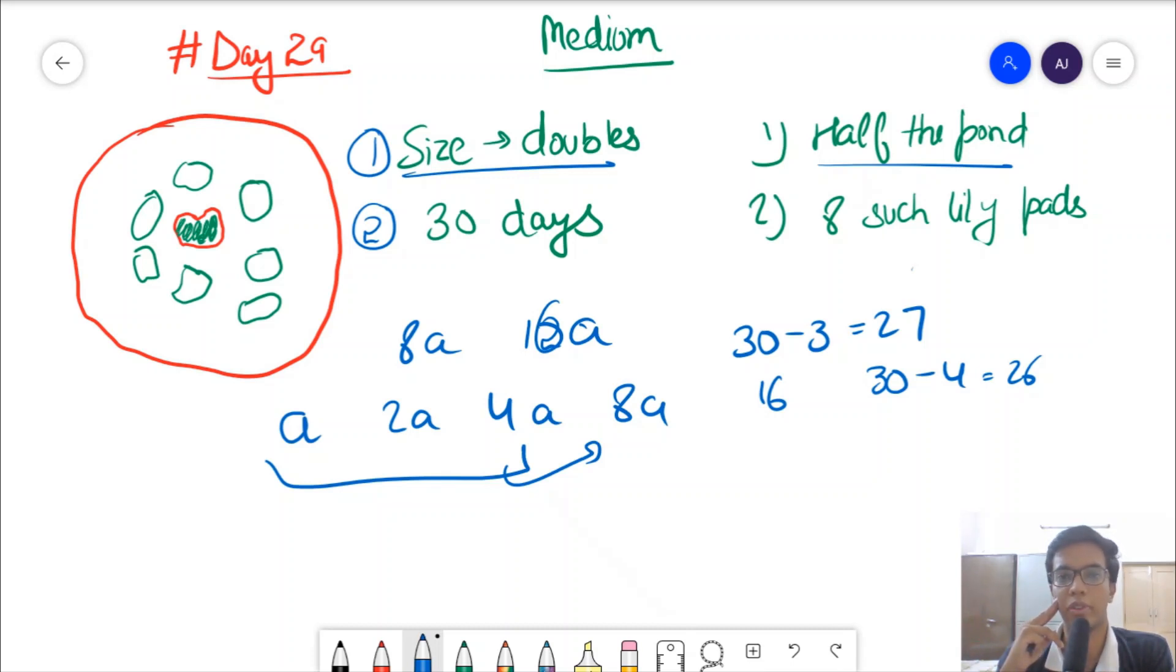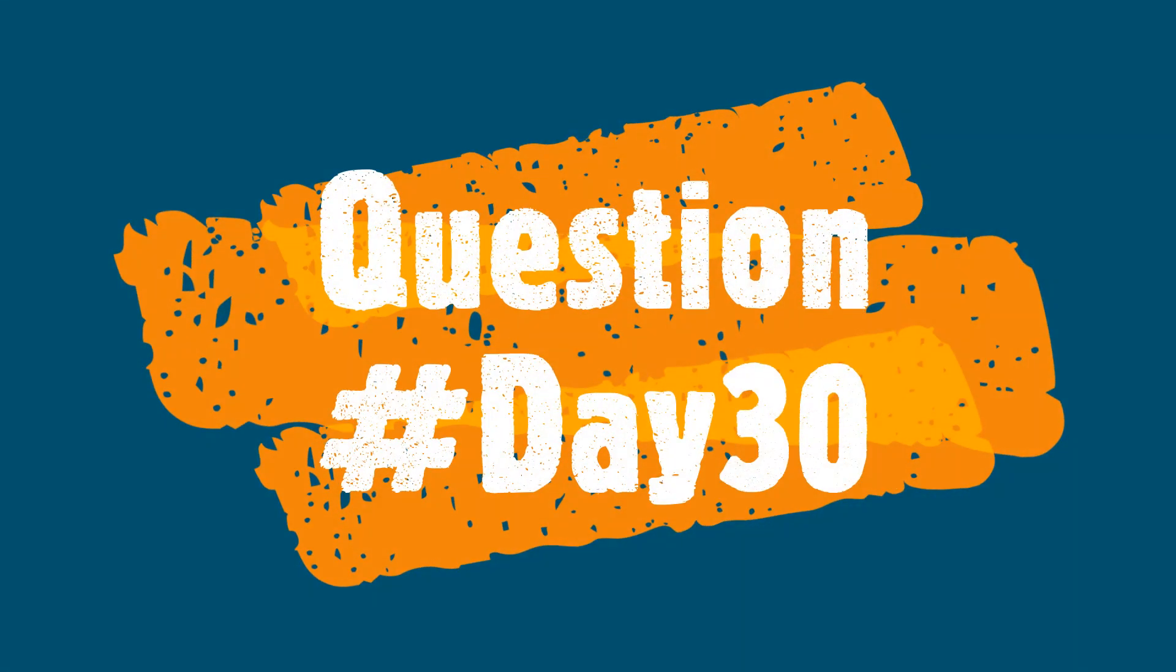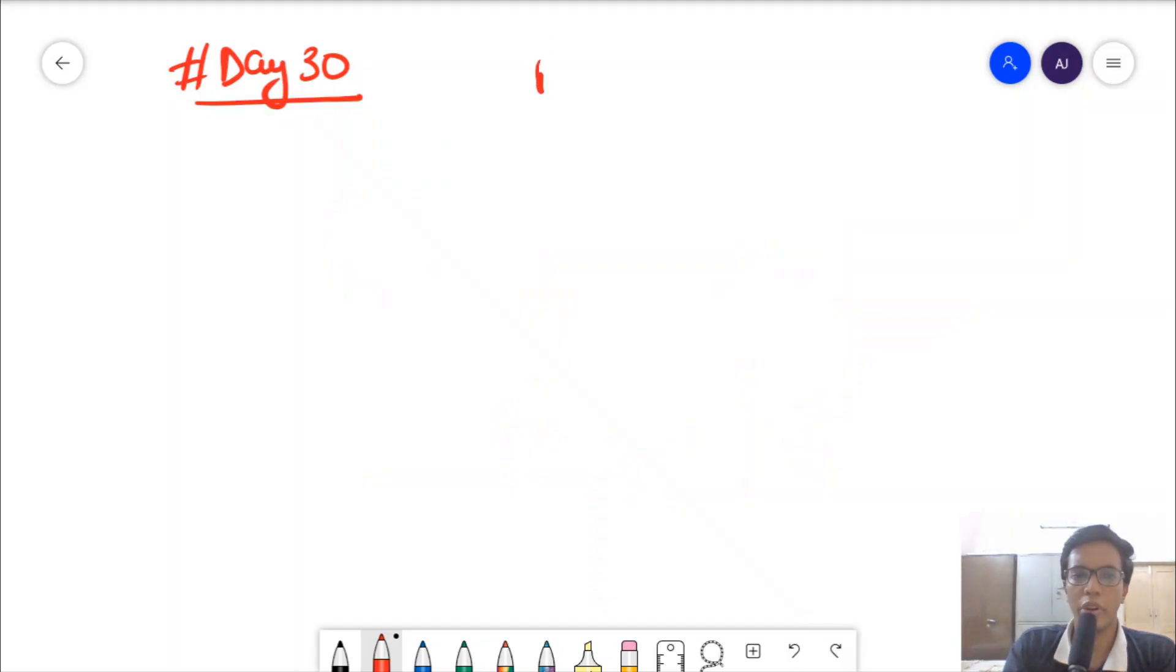So with this, let's move on to the question for day 30. Day 30 question is going to be a very easy question. Very standard question also. You must have heard this, maybe mostly all of you have heard this if you have some interest in puzzles. So this puzzle is that you have a tap.